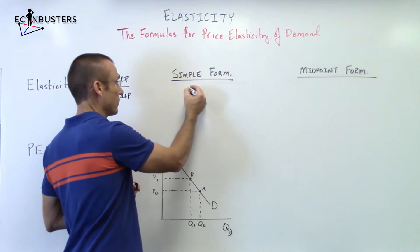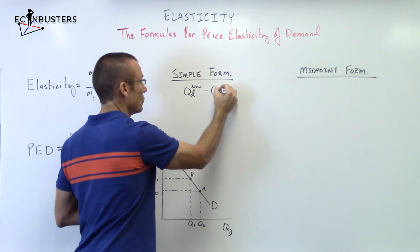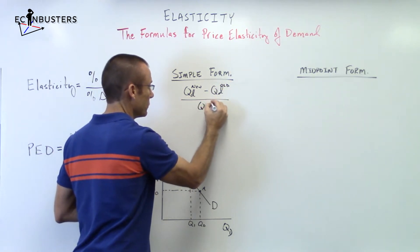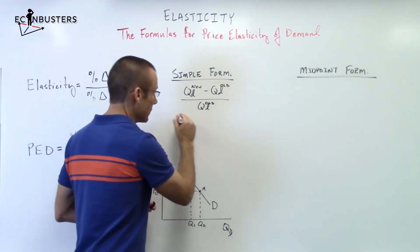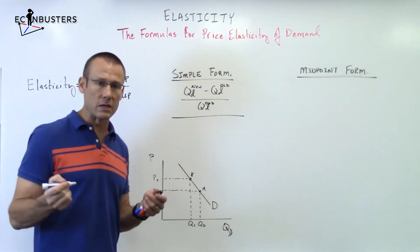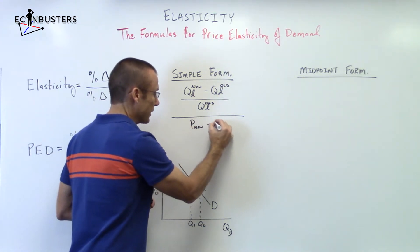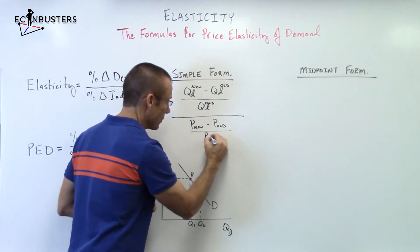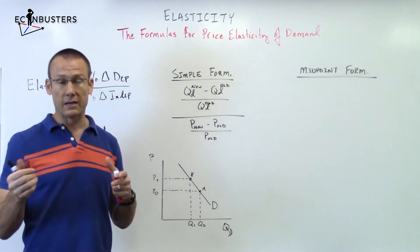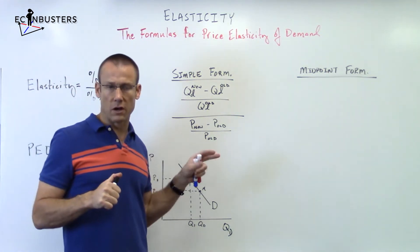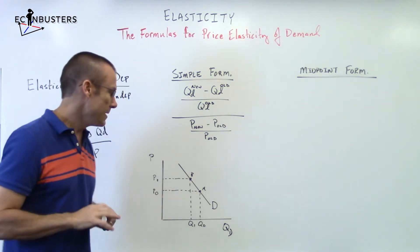So we're going to do new minus old over old for quantity demanded, and new minus old over old for price. It's very simple. We've got QD-new minus QD-old over QD-old for the percent change in QD, and then over that we put the percent change in price: price-new minus price-old over price-old. That's the simple formula, and often in classes and even on AP tests, this will be good enough.